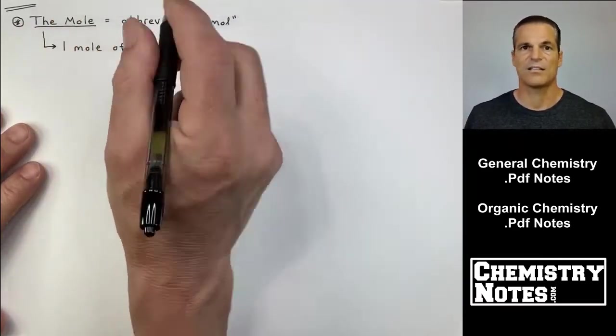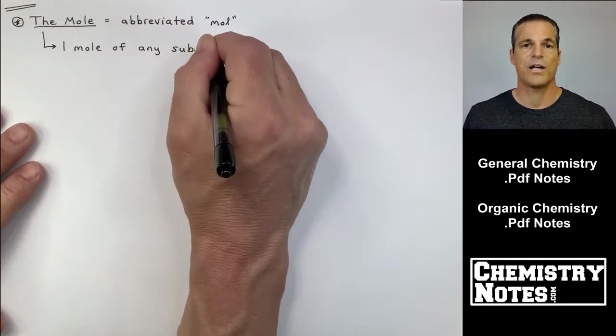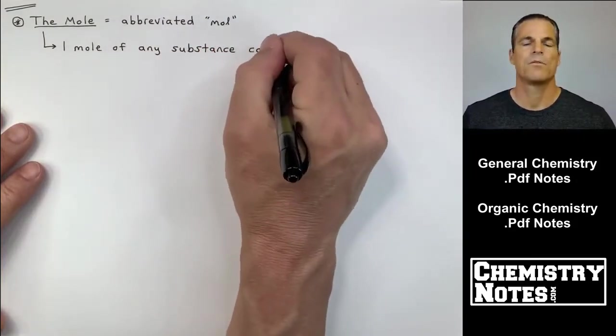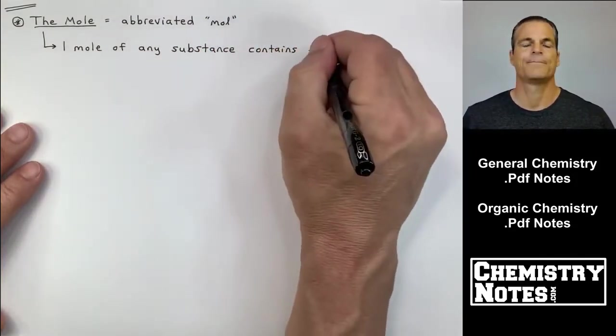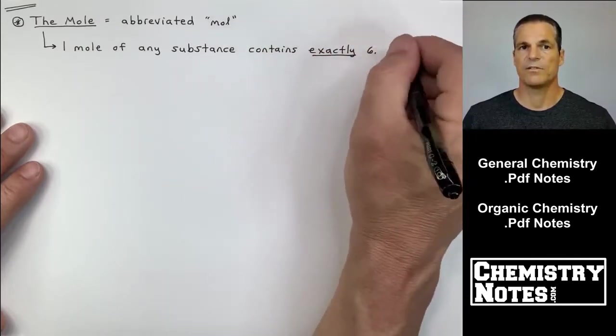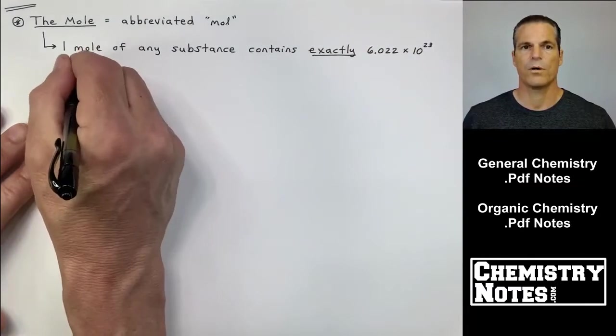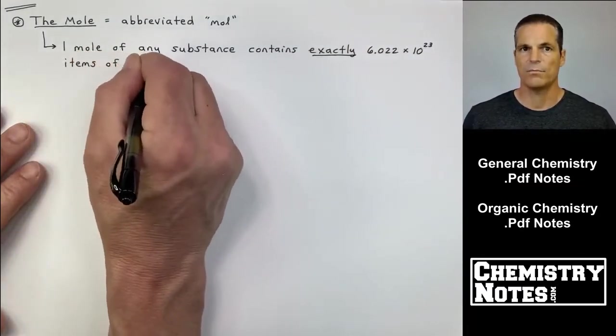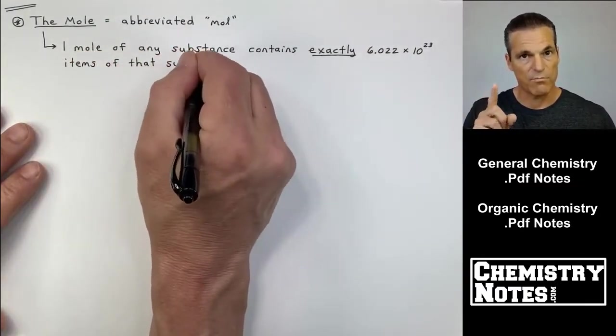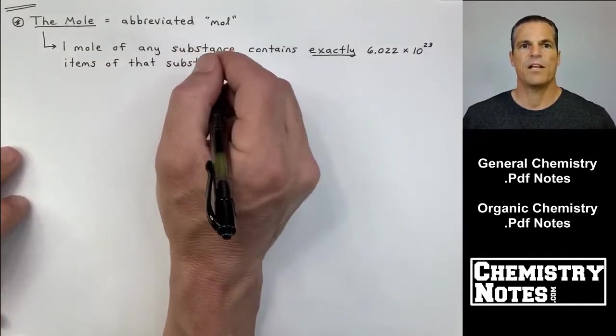We know that if you have a dozen eggs or a dozen slices of bread, that's 12, right? Well, the mole is the same idea. Now the mole is abbreviated MOL, which is just one letter short of the full word, but it's abbreviated MOL, not to be confused with molecules.